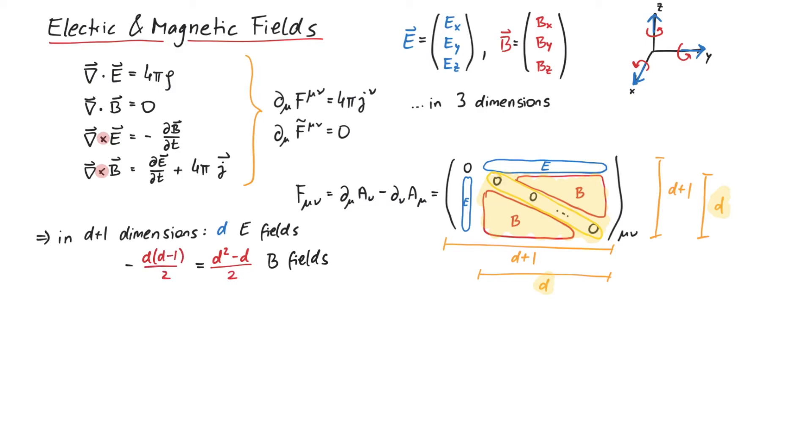If we are feeling fancy, we can denote this as D choose two. Let's check this for D equals three. And we really get three electric fields and three magnetic fields.